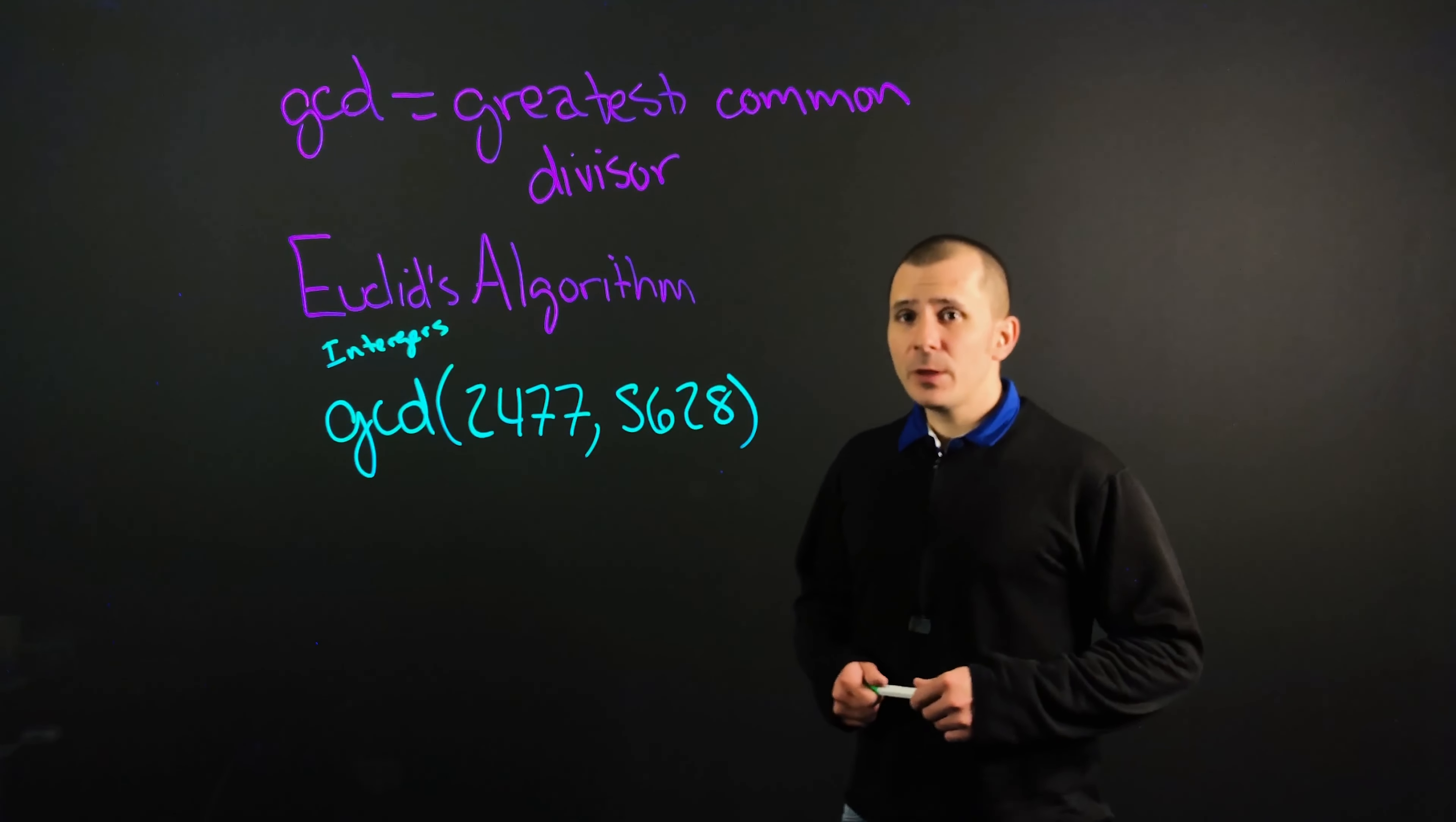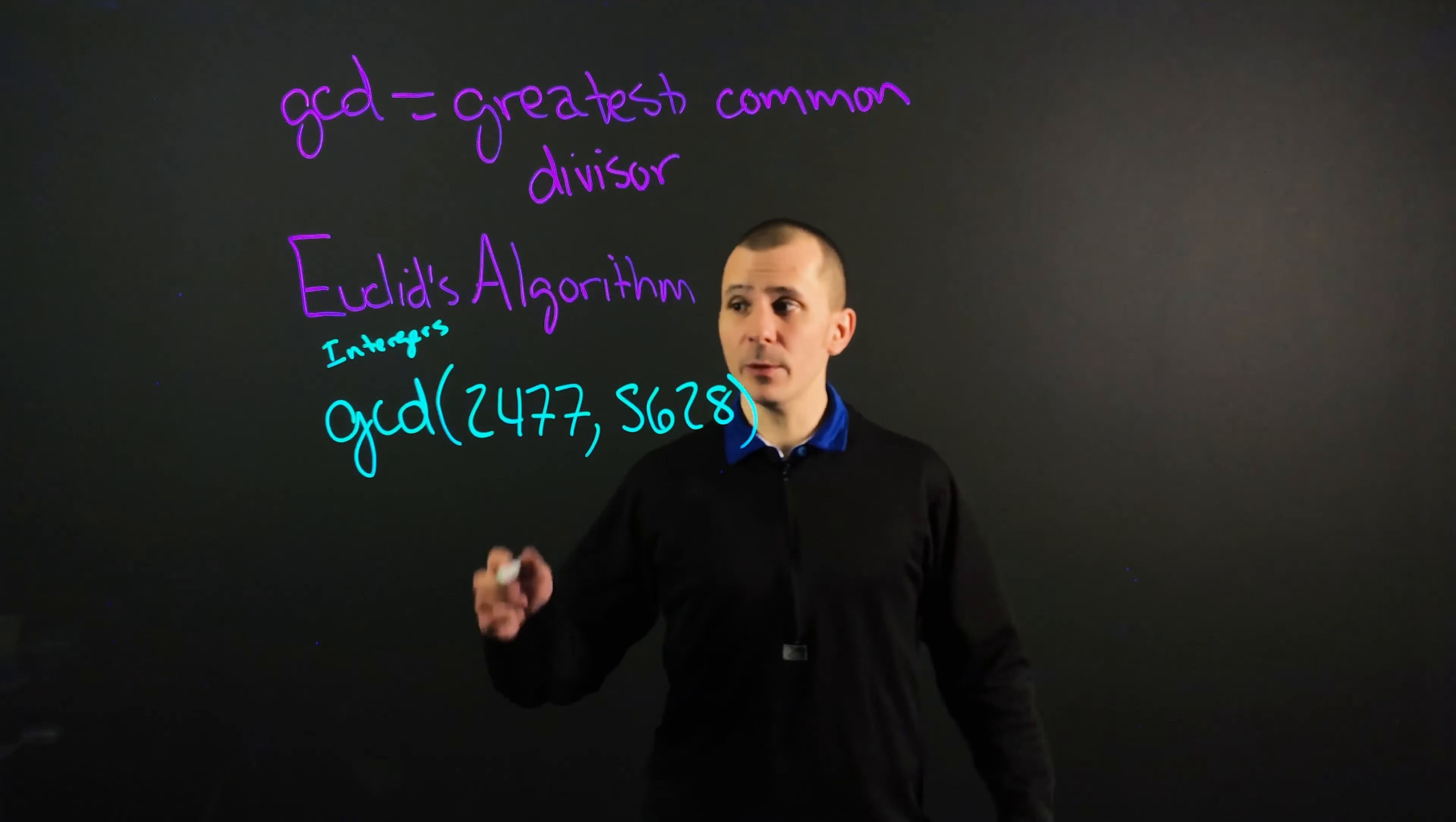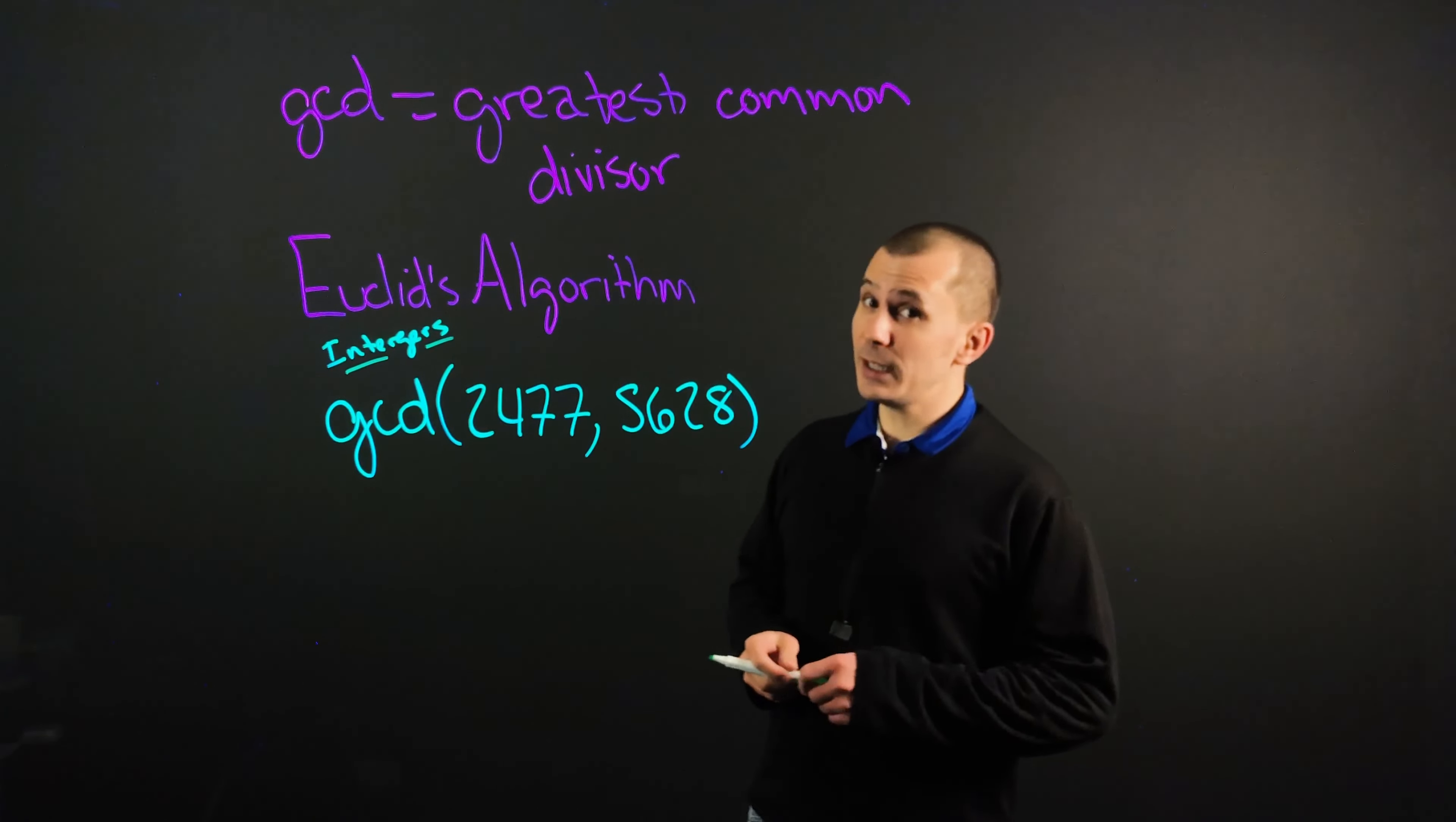Hi there. Today we're going to talk about Euclid's algorithm, also known as the Euclidean algorithm, to find the greatest common divisor between two integers. It's very important to remember that it needs to be two integers. Otherwise, you'll be here for a very long time not understanding what went wrong.